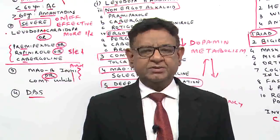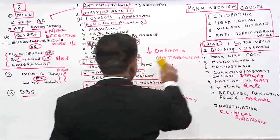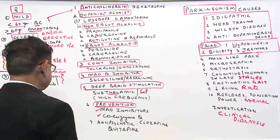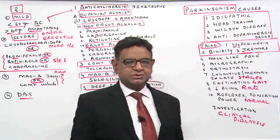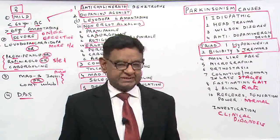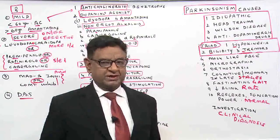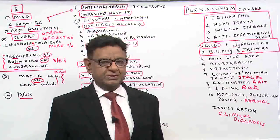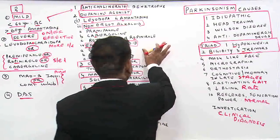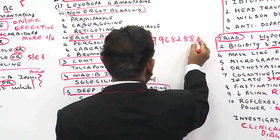I hope you are quite clear about the basic concept of Parkinsonism. Here is a question for you: I mentioned that coenzyme Q is used in the treatment of Parkinson's to slow down progression. In which other condition is coenzyme Q used? Specifically, in which cardiac condition is coenzyme Q used? You can send your reply to my WhatsApp at 99682-88832.